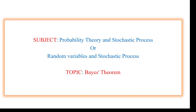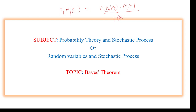If A and B are the two events, then the conditional probability can be defined as the probability to get A, given that B has already happened. This can be defined as P(B|A) multiplied by P(A) divided by P(B). This is Bayes' theorem using conditional probability.